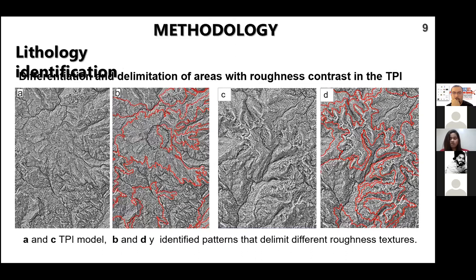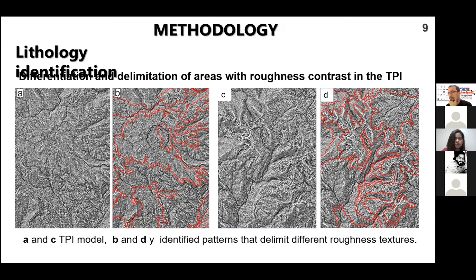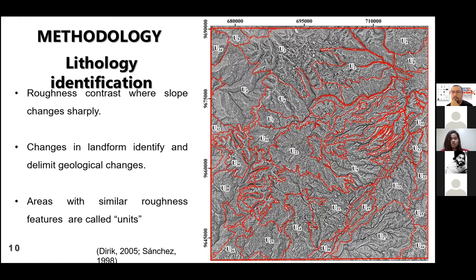The topographic variability of the area is shown by the roughness analysis. The roughness analysis considers the change in pattern and texture in the TPI. Differentiation and delimitation of areas with different roughness contrast is carried out in this model by identifying changes in the pattern. For the delimitation, we consider roughness contrast with sharp changes, identifying geological change. Areas with similar roughness fit to one colored unit. We differentiated 37 units.